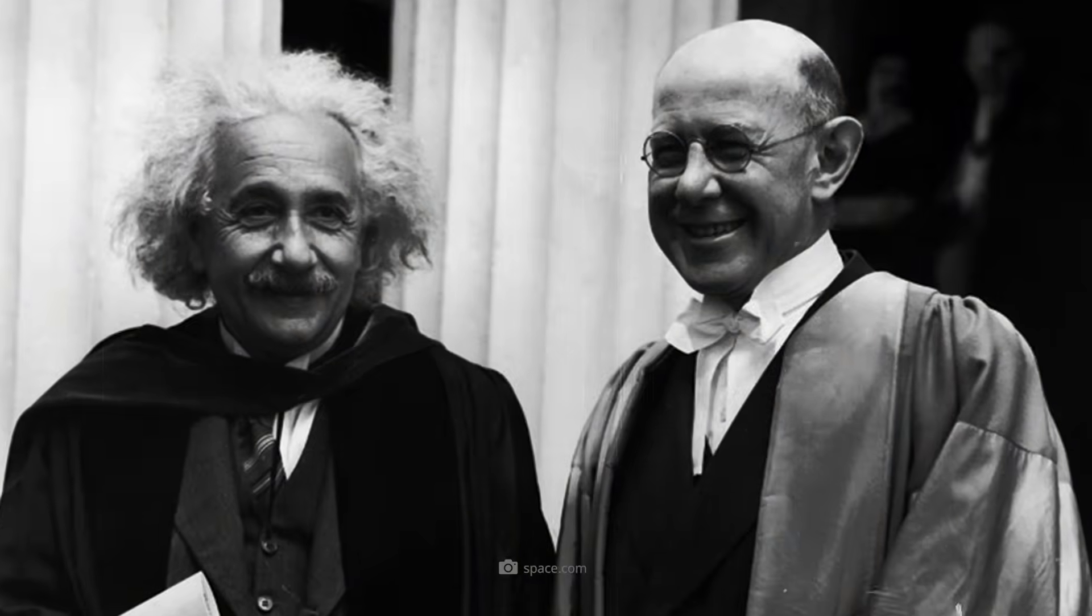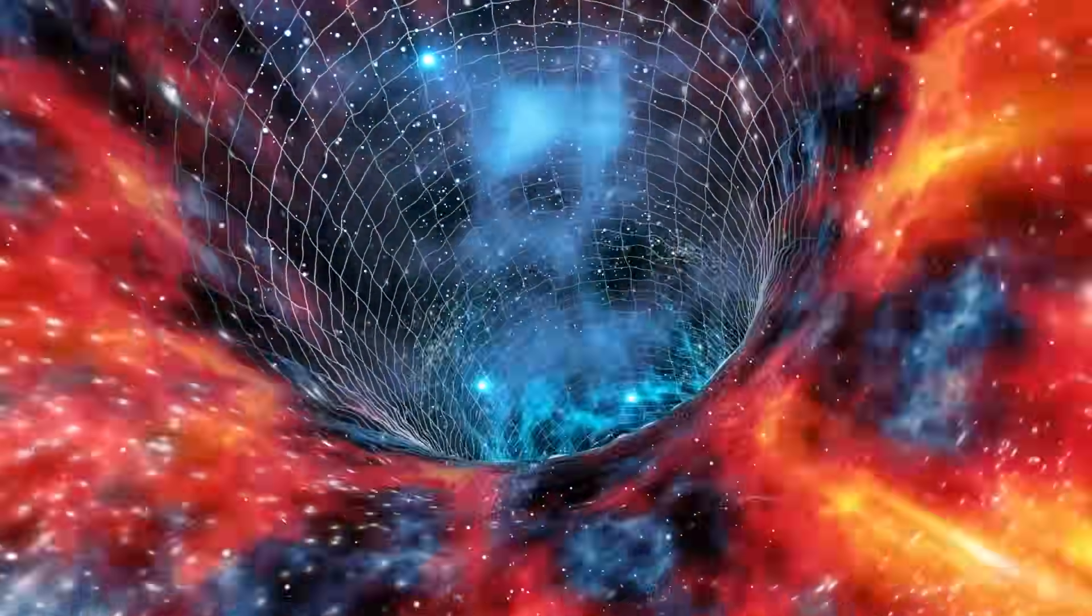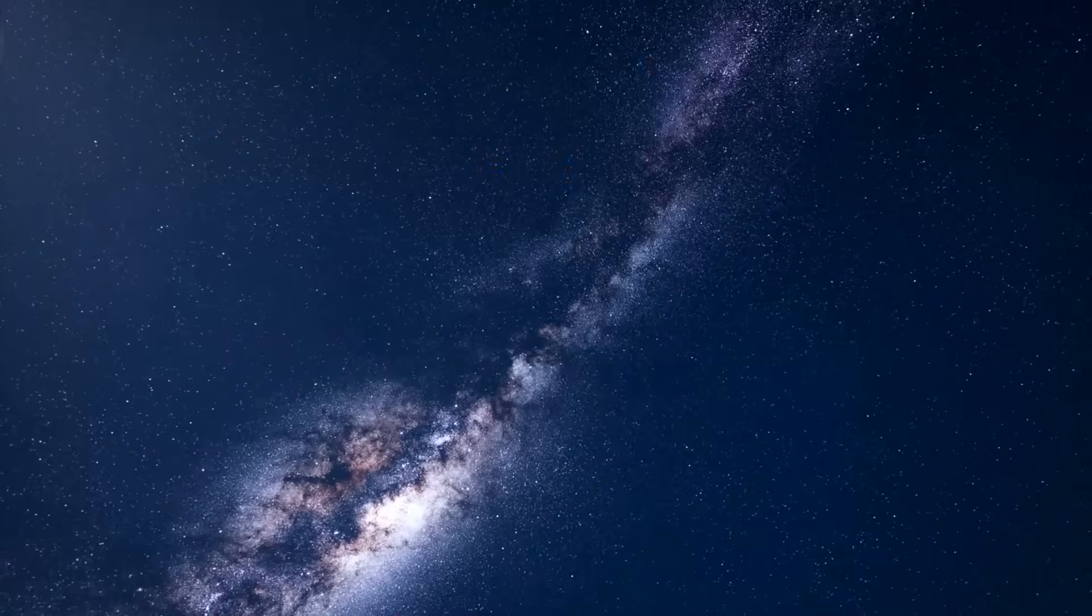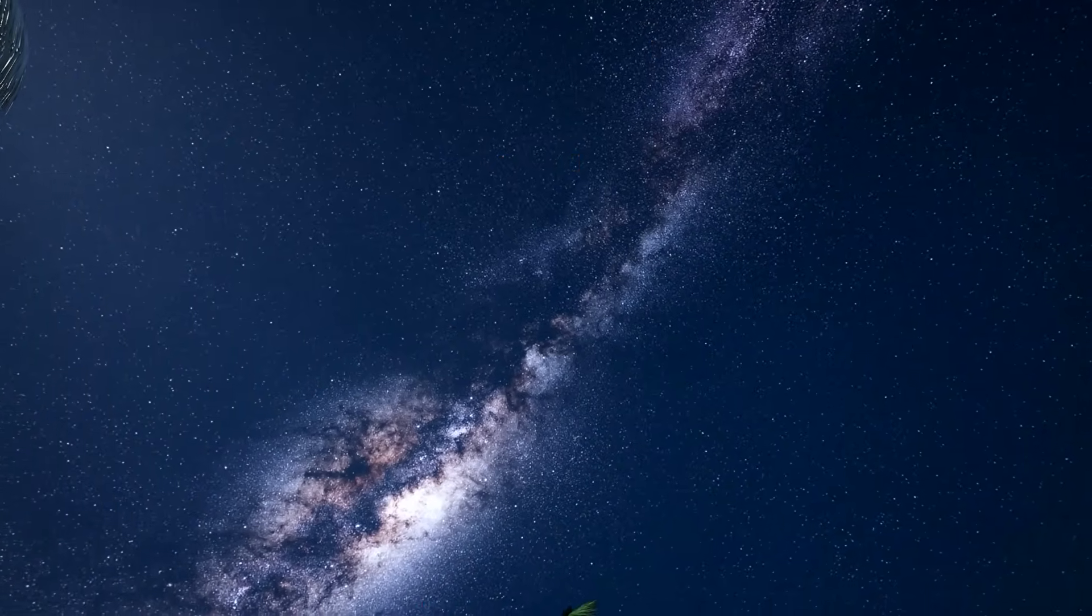Even Albert Einstein thought that wormholes were possible. His research in the 1930s, combined with that of Nathan Rosen, led to the idea of the Einstein-Rosen Bridge. This is a mathematically verifiable tunnel that could theoretically connect two distant points in the universe directly.